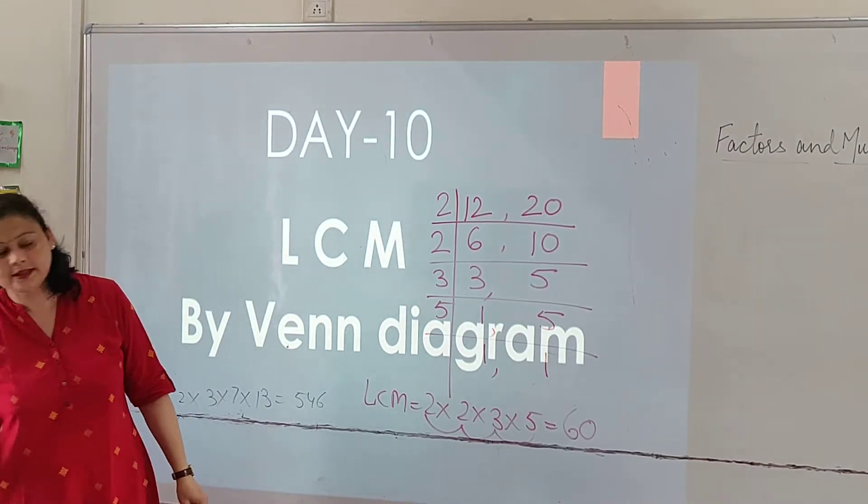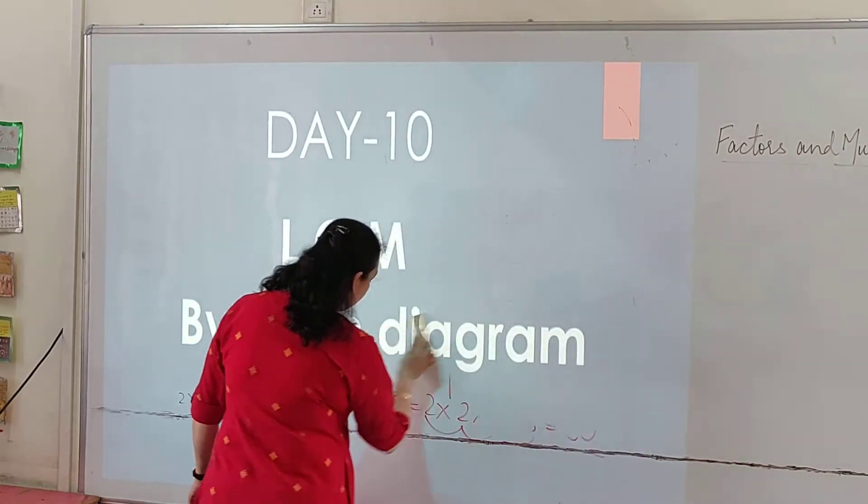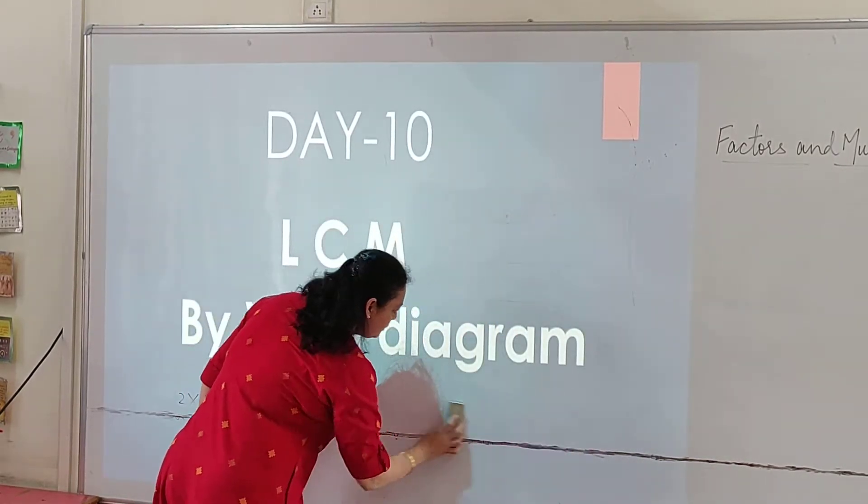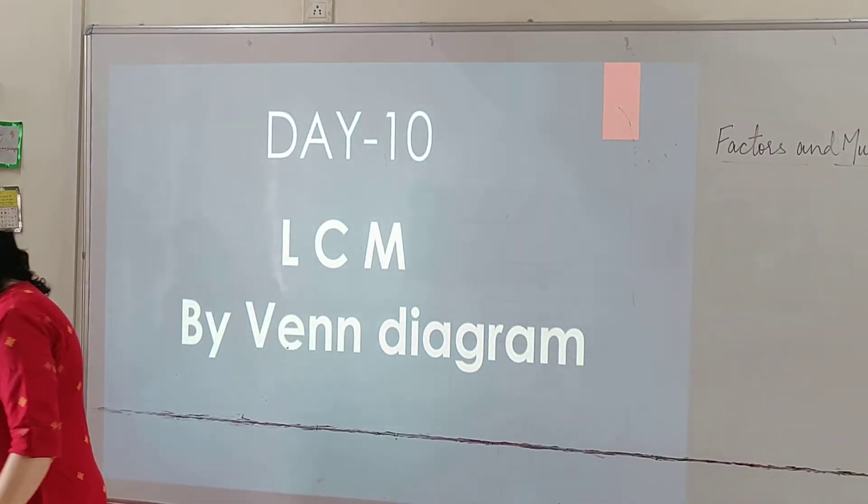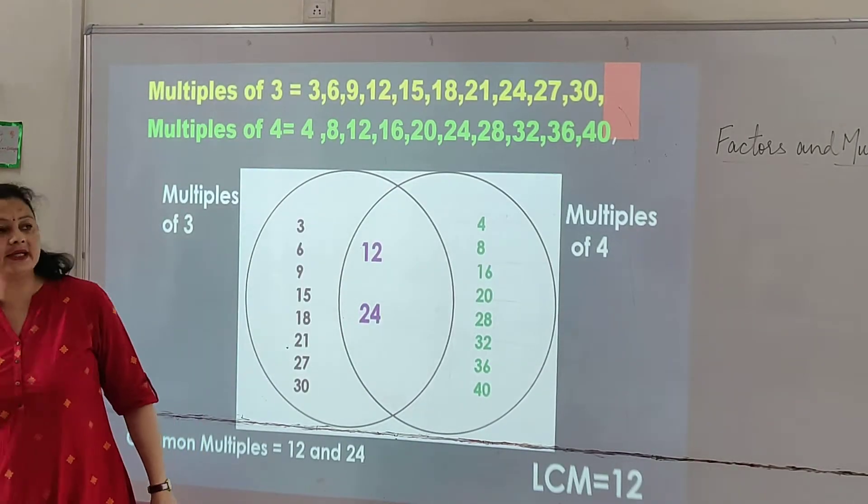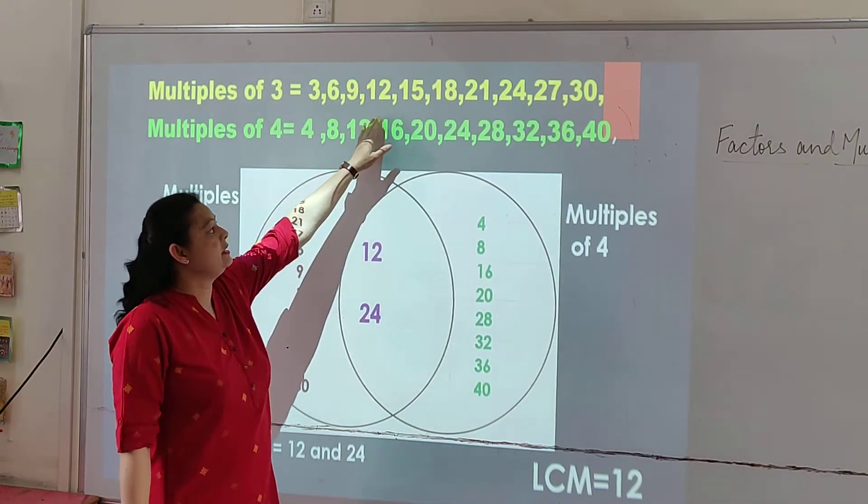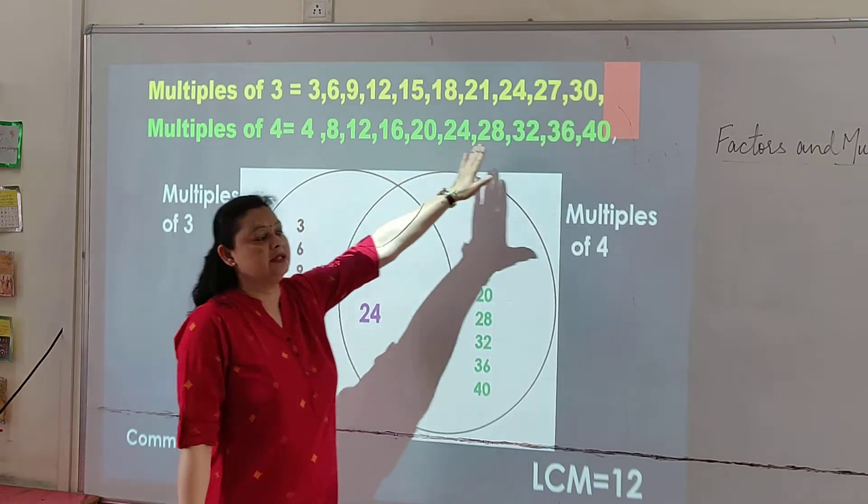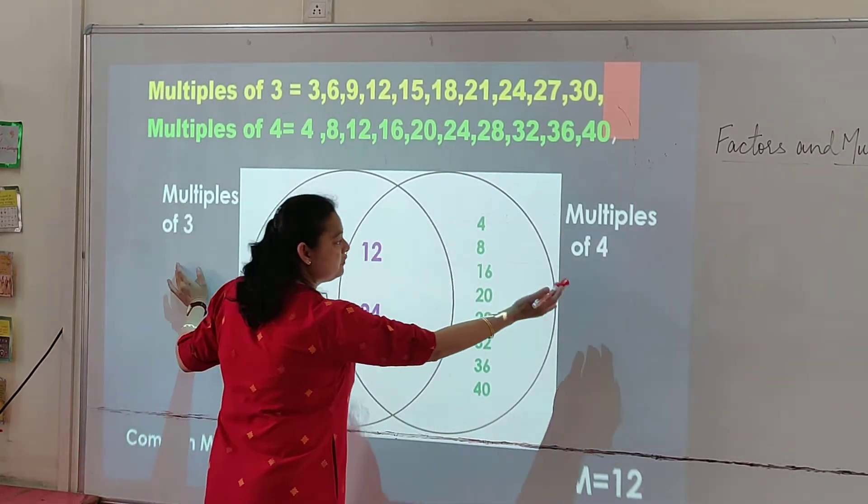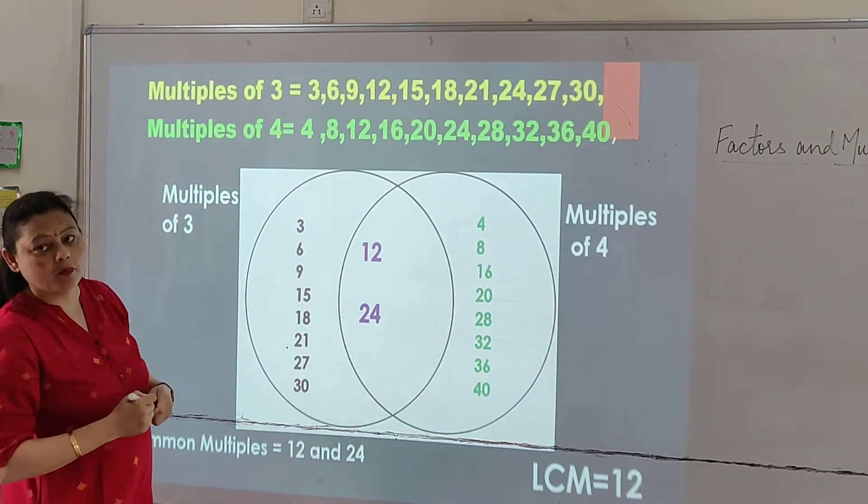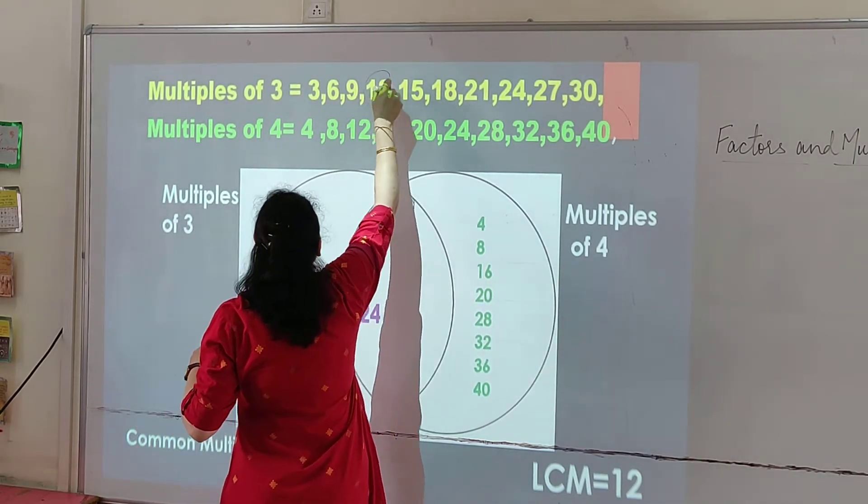Day 6. We can also find the LCM with the help of a Venn diagram. Venn diagram you already have learned children in HCF. You know how to make a Venn diagram. So what do we do? LCM with Venn diagram. As you can see here, multiples of 3 written till 10, multiples of 4 till 10. Now Venn diagram: multiples of 3 one side and multiples of 4 one side, the common ones inside. We will find out the common ones first. 3 is not common, 6, 9, 12. Yes, we got the first common multiple.